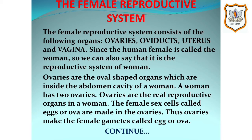Since the human female is called woman, we can also say that it is the reproductive system of woman. Ovaries are the oval shaped organs which are inside the abdominal cavity of a woman. A woman has two ovaries. Ovaries are the real reproductive organs in a woman. The female sex cells or female gametes called eggs or ova are made in the ovaries. Thus ovaries make the female gametes called eggs or ova.